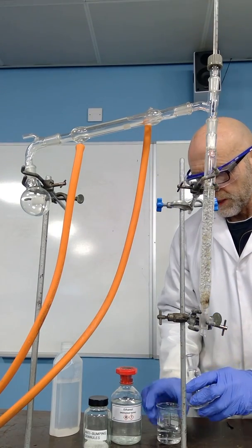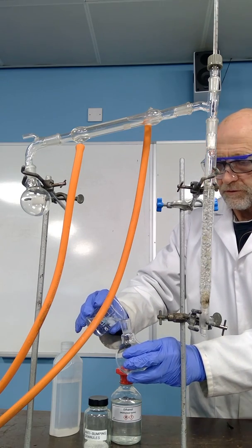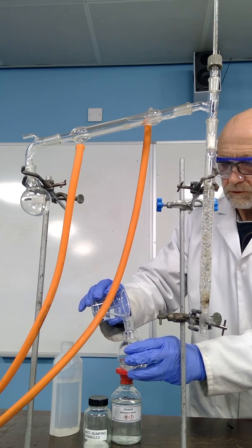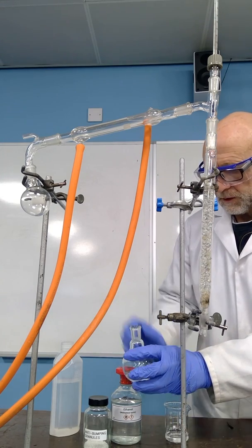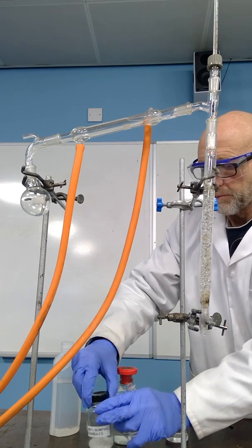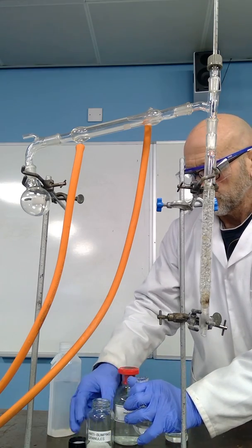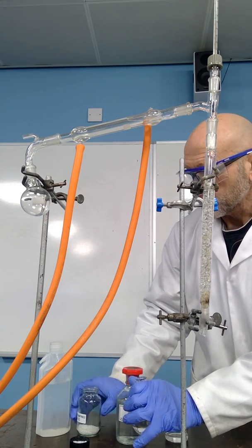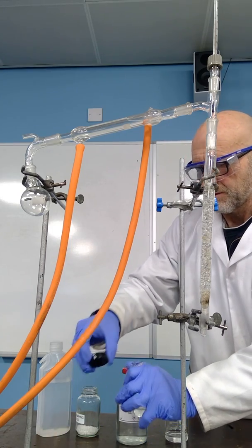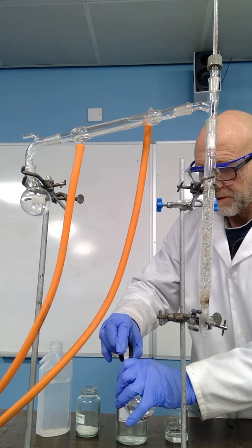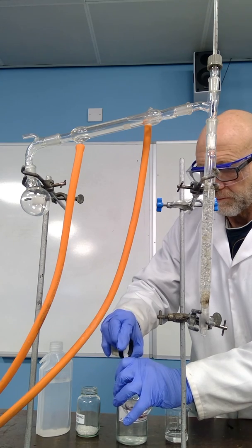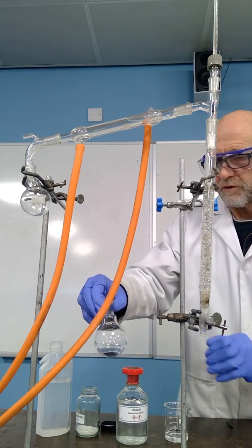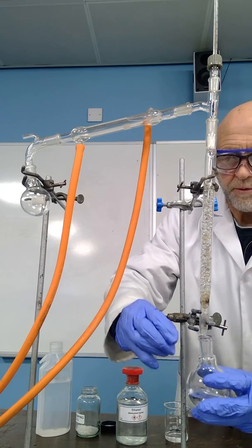So as well as the mixture of ethanol and water, which is non-flammable, I will add a few anti-bumping granules so that I'm able to produce the correct combination of anti-bumping granules and mixture so that the boiling is not too violent. And then I'll replace that into here.